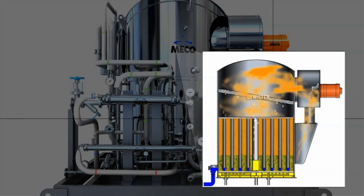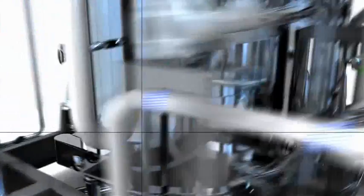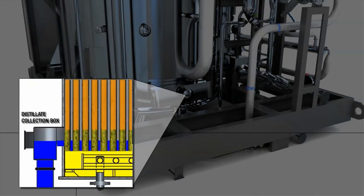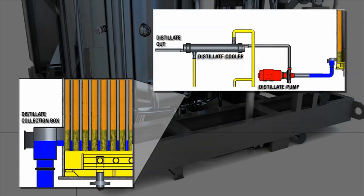Entrained water droplets, which have been removed by the demister, return to the process. Vapor condenses on the outside of the evaporator tubes, forming distillate. Distillate drips down the tubes, is gathered in the distillate collection box, and is then pumped out by the distillate pump through a cooler and out of the still for use.